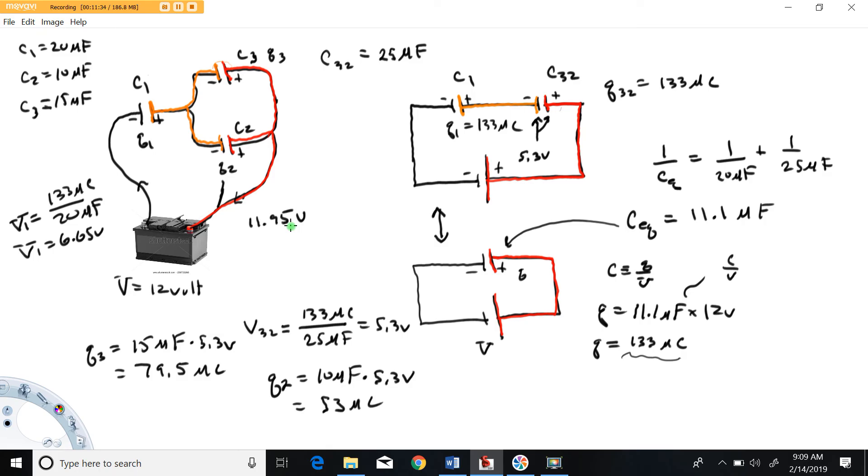So this is just meant to be an example here of how to analyze a circuit that's got multiple capacitors via using the ideas of equivalent capacitance. Hope that this has helped anyone watching this understand this stuff. Have a great day.